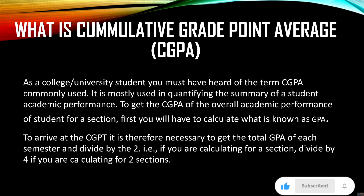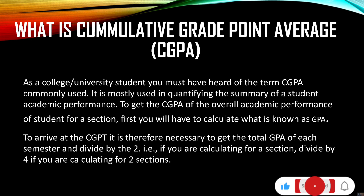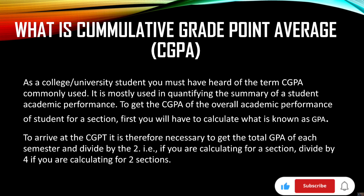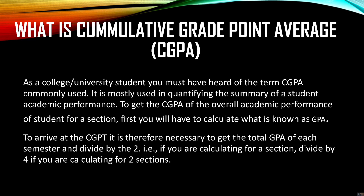The CGPA is the summation of your GPA for about two semesters to make a section. To arrive at the CGPA, it is therefore necessary to get the total GPA of each semester and divide it by two — that is, if you are calculating for one section — or divide by four if you are calculating for two sections. A section is made up of two semesters: the first semester and the second semester. To get your CGPA you have to first calculate the GPA, which is the Grade Point Average, for each semester.